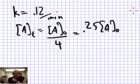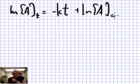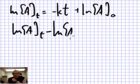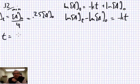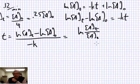This is a first-order reaction, and for a first-order reaction the natural log of A at any time equals minus KT plus the natural log of the initial concentration. Solving for time: time equals the natural log of A at time T minus the natural log of the initial concentration, all divided by negative K. Or equivalently, the natural log of [A_t / A_0] divided by negative K.